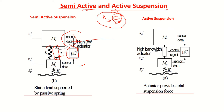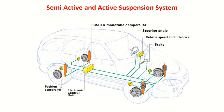In an active suspension, we decide what the total force should be and control it accordingly. The vehicle steering angle is an input to the ECU — when you steer, it tells the ECU in which direction the vehicle is heading. Vehicle speed indicates how quickly a wheel may reach a road obstacle.